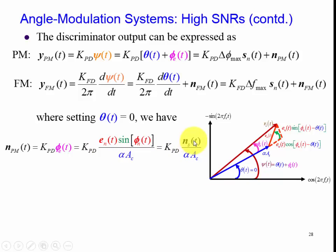This gives us the result, as this is the n_s of t that's perpendicular to alpha A_c. So that's the perpendicular component of the noise term.